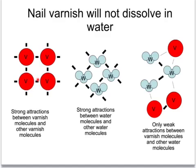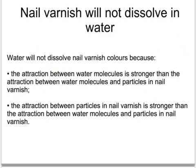There are very strong attractions between each of the particles in nail varnish, and these are quite difficult to break. There are also strong attractions between the water molecules in the solvent water. However, water can only make weak attractions between itself and the nail varnish, and these aren't strong enough to overcome the attractions between the varnish molecules, or to overcome the attractions between the water molecules. So water will not dissolve nail varnish colours because the attraction between one water molecule and its neighbours is stronger than the attraction that water molecules can make with particles of nail varnish. And the attraction that already exists between particles of nail varnish is stronger than the attraction that water can make with those particles. So the nail varnish stays with the nail varnish and the water stays with the water.